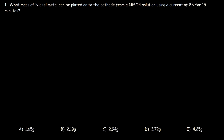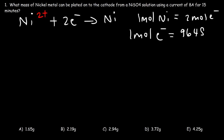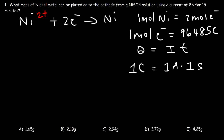First, let's write the half reaction that occurs at the cathode. Nickel two-plus is going to be reduced to nickel metal. This tells us that one mole of nickel can be plated onto the cathode for every two moles of electrons that pass through the solution. One mole of electrons equals 96,485 coulombs, and charge equals current multiplied by time. The unit for current is amps, the basic unit for time is seconds, so one coulomb represents a current of one amp flowing for one second.